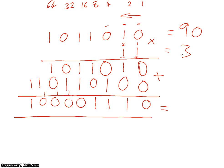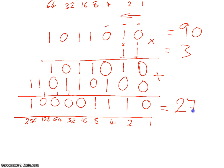We're looking for a result of 270. Working along our answer we have no ones, a two, a four, an eight, no sixteens, no thirty-twos, no sixty-fours, no one-twenty-eights, and a two-fifty-six. So 256 plus 8 plus 4 plus 2 gives us 270 — we've got that one correct.